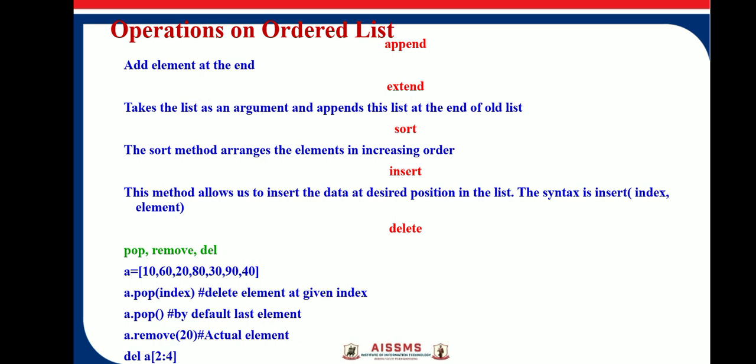Here are examples: a.pop(index) deletes the element at a given index; a.pop() by default removes the last element; a.remove(20) removes the actual element 20 from the list; and del a[2:4] removes multiple elements — specifically elements at indices 2, 3, and 4. These are the operations performed on a list.